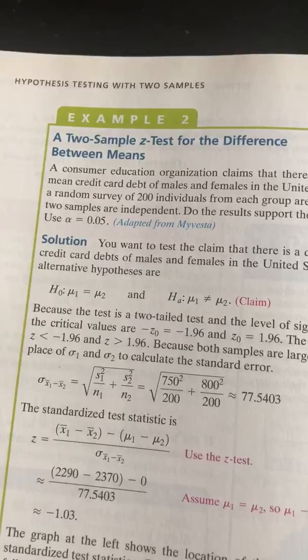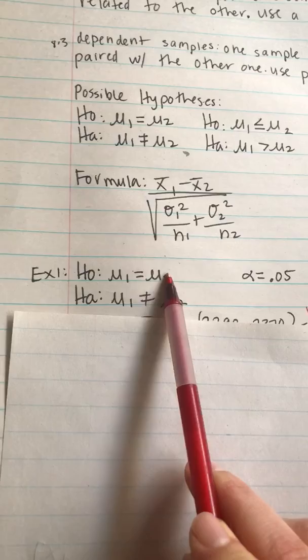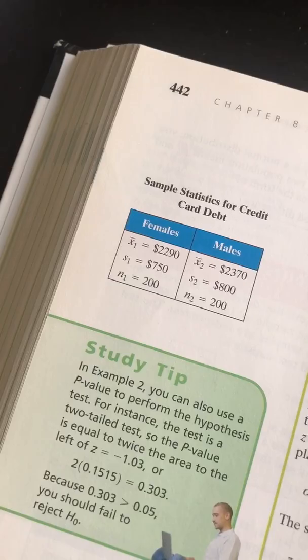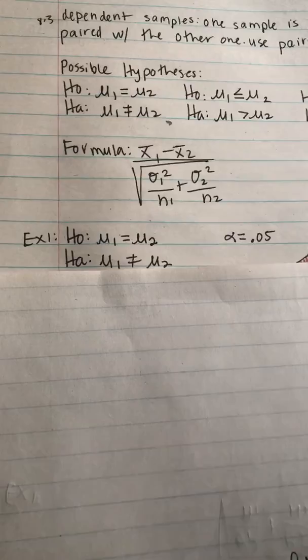You might want to review your notes from Section 7.1 because many things are similar. The significance level is 0.05. First, write down the hypotheses: the null is mu₁ equals mu₂, and the alternative is mu₁ not equals mu₂. This means there is no difference versus there is a difference between females and males. In the book, number one represents females and number two represents males.